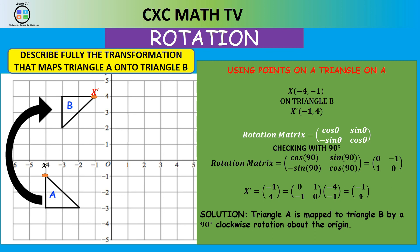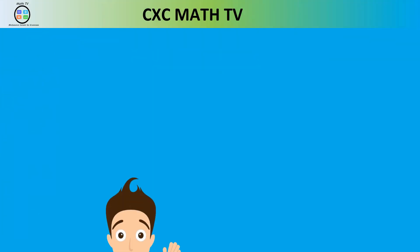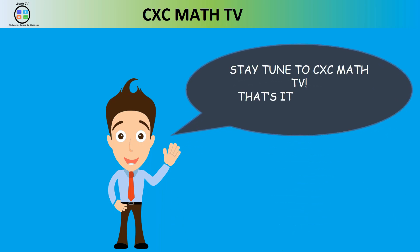Generally, try angles of 90, 180, 270, or 360 degrees when testing. In this case 90 degrees worked perfectly. So the answer is: triangle A is mapped to triangle B by a 90-degree clockwise rotation about the origin. That concludes this video — the next video will cover rotation not from the origin. Keep practicing and have a blessed day!